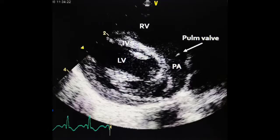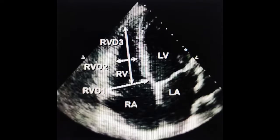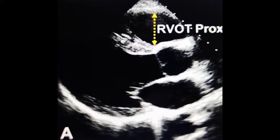In pulmonary hypertension, you will see a crescent shape of the RV and septal flattening during systole and diastole. In the apical four-chamber view, RV hypertrophy and dilatation are present; the RV free wall is the first to become hypertrophic, with systolic dysfunction and low tissue myocardial velocity. RV wall thickness will be more than 5 mm. At the base, RV diameter will be more than 42 mm, at mid-level more than 35 mm, and longitudinally more than 86 mm.